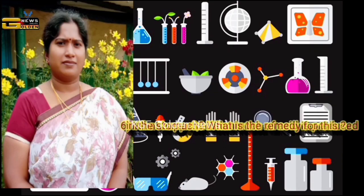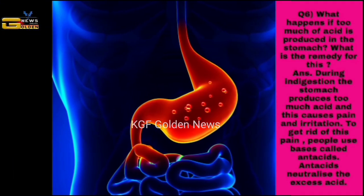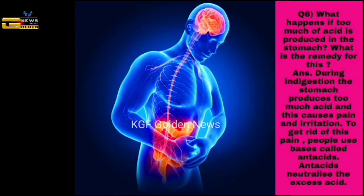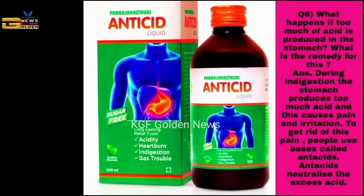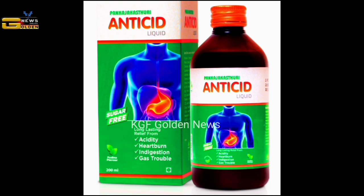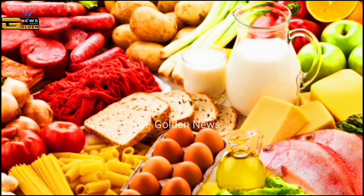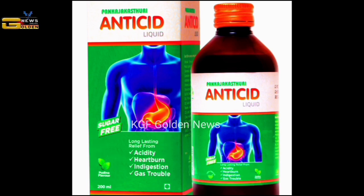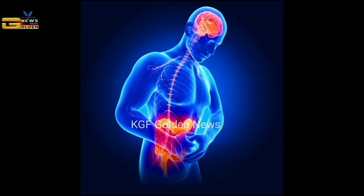Question number six: what happens if too much acid is produced in the stomach? What is the remedy for this? The answer is, during indigestion, the stomach produces too much acid and this causes pain and irritation. To get rid of this pain, people use bases called antacids. Antacids neutralize the excess acid. Our stomach produces hydrochloric acid which helps in the digestion of food. Excess of hydrochloric acid causes hyperacidity. Antacids, being basic in nature, neutralize the excess acid and give relief from pain caused by hyperacidity.